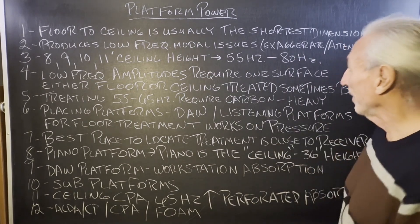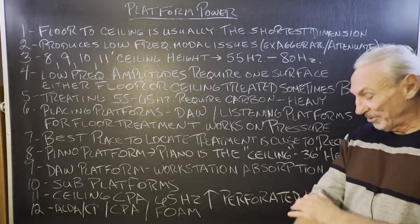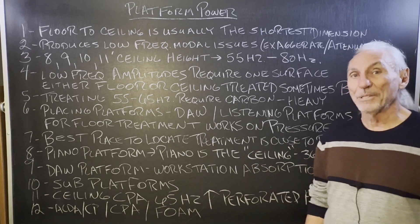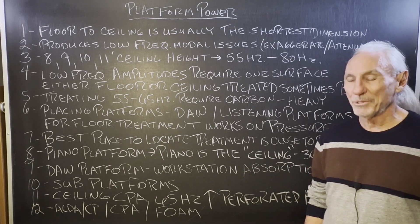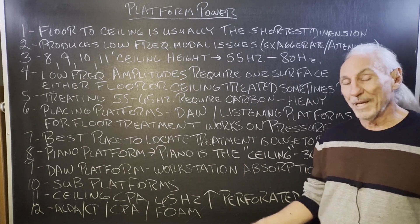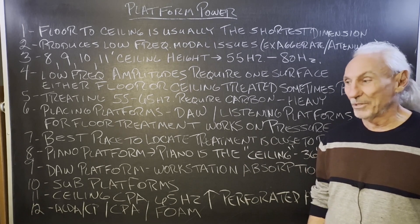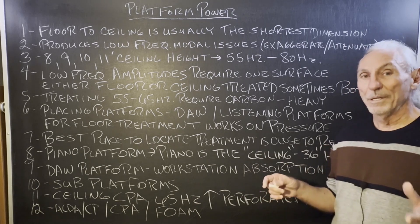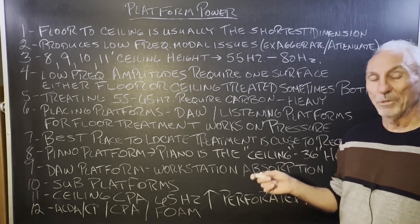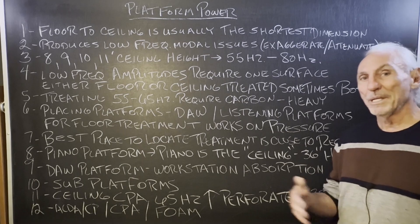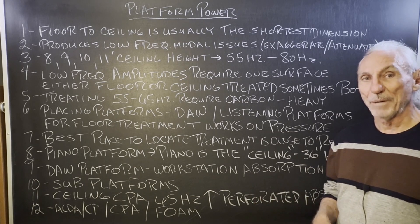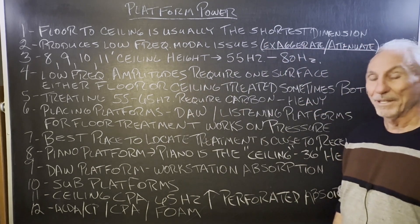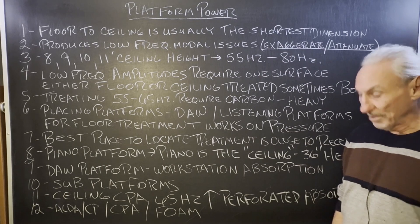We know that usually the ceiling dimension in rooms is the shortest distance — width, height, length. The ceiling is almost always the shortest, without exception, though in a few cases it's not. The next dimension after that is width, which is a little bit shorter. The height and width have to work together. Lower numbers in dimensions produce higher modal issues — lower frequency and higher amplitude issues. It's the amplitude or strength of the frequency that bothers us; that's what creates the modes. And those exaggerate and attenuate constantly, which is the last thing you want when trying to get resolution in a particular room.